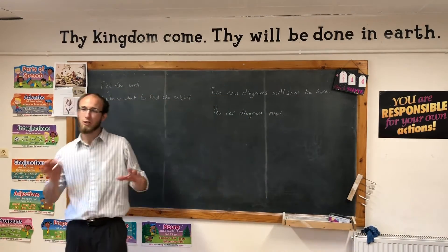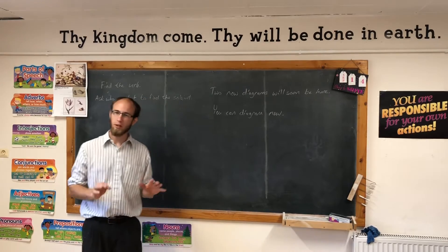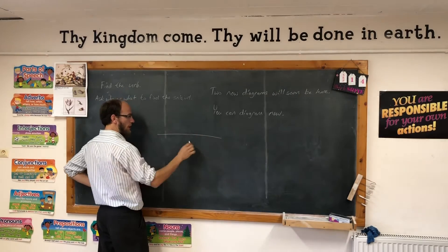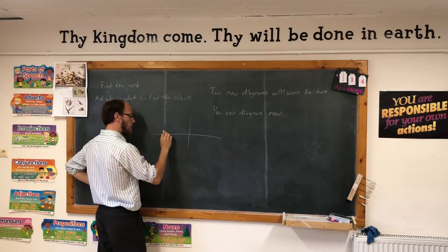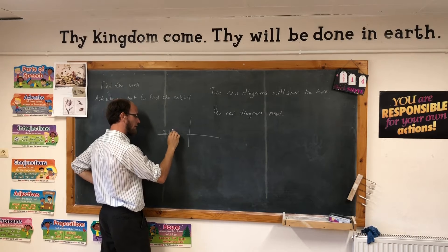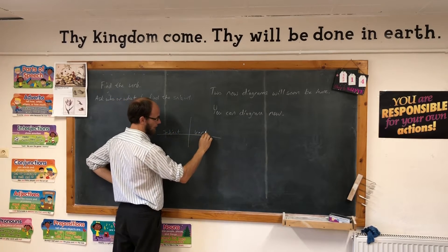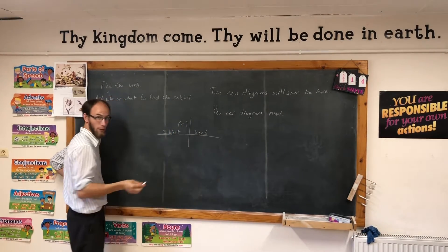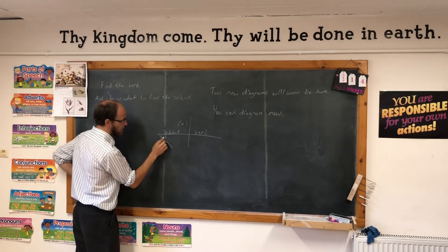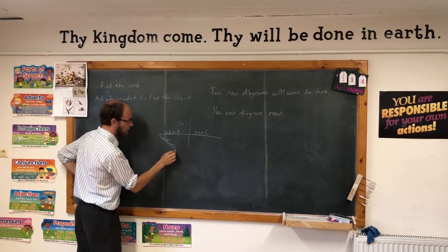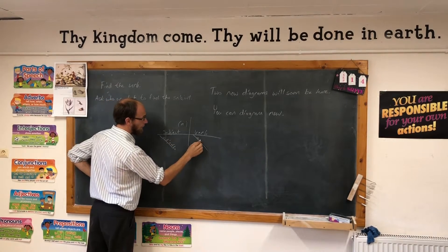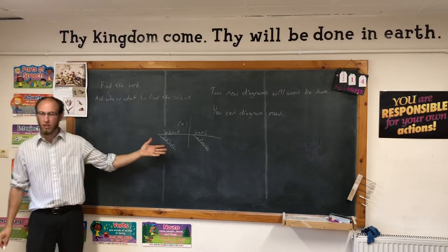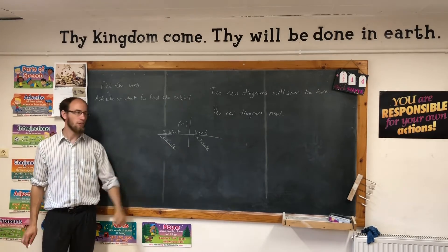A diagram is a special kind of map that we put our sentences on. The way we do a diagram is we draw a solid line and then divide it here. On this side we put the subject — the subject will always be a noun or a pronoun — and here we put the verb. Under the subject we put our adjectives, and under the verb we put our adverbs. So there it is in a simple form; this is what it's going to look like.